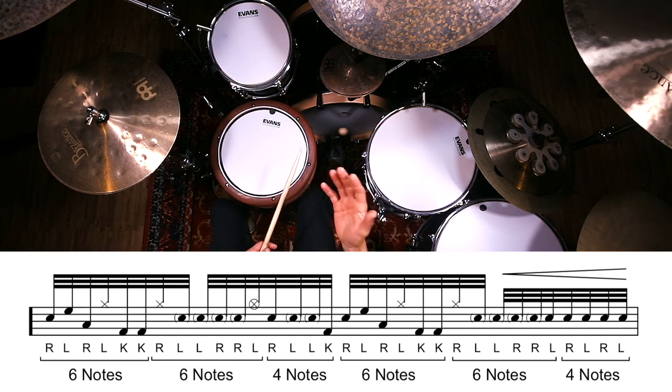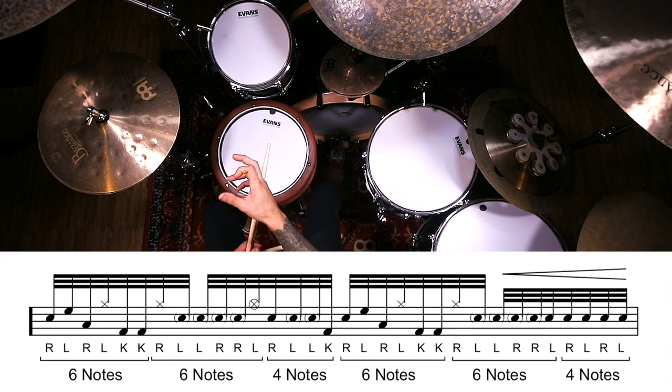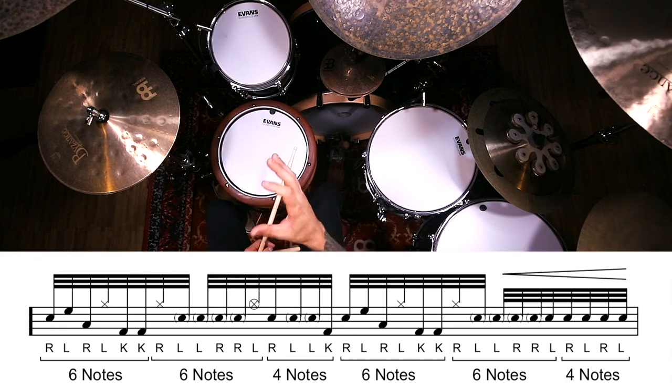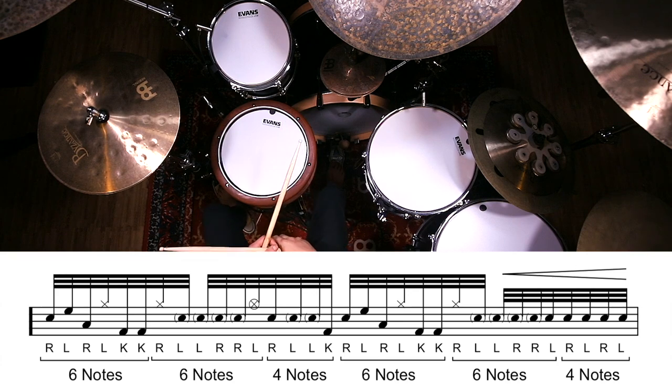Now let's just connect those first two groupings of six. So we have our linear pattern, right, left, right, left, kick, kick into the six stroke roll exactly as it's written. Let's just play our first 12 notes.